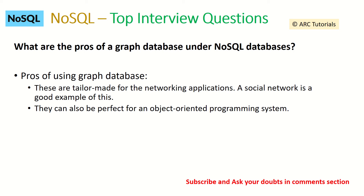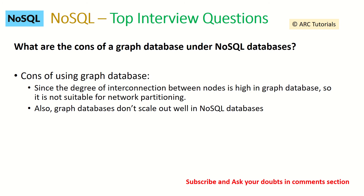The next question: what are the pros of a graph database under NoSQL? Graph databases are tailor-made for networking applications — a good example are social networks. They can also be perfect for object-oriented programming systems. On the same lines, the cons of a graph database: since the degree of interconnection between nodes is high, graph databases are not suitable for network partitioning. Also, graph databases don't scale out well in NoSQL. You can add value to your interview by giving examples of applications you have built or used and discussing how easy or difficult they were to scale.